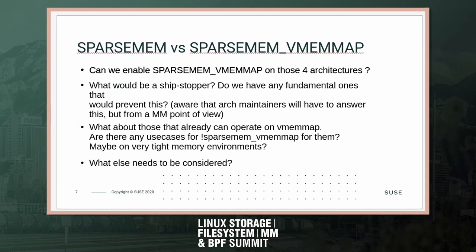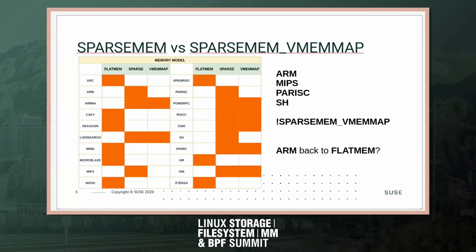That brings up the key question: the most important one is whether we can enable VMEMMAP on those architectures that currently lack it — otherwise this is off the table. David asks which four architectures exactly. Oscar confirms that, if Mike is right about PA-RISC using flatmem, then at least MIPS, PA-RISC, and SH are the ones that need converting, as they can operate on SparseMem but not on VMEMMAP. One issue is that some of these architectures are 32-bit — MIPS is both 32-bit and 64-bit — and vmemmap might be problematic there.